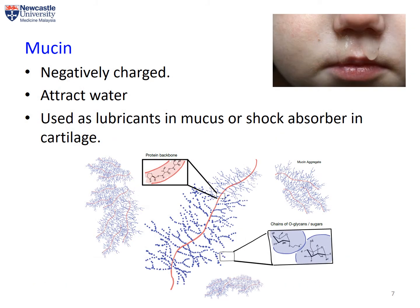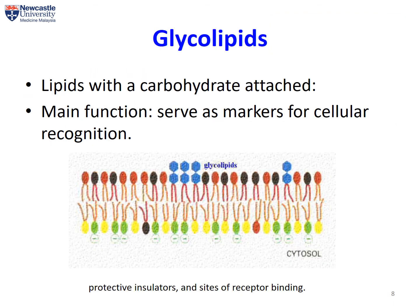A second example of a glycoprotein is mucin, which is found in mucus. Mucin has a protein backbone attached with many sugar molecules through O-glycosylation, and these sugars are known as O-glycans. Because this highly branched structure is highly polar due to the presence of multiple hydroxyl groups, it can attract water molecules. As a result, mucin can be used as a lubricant in mucus or serve as a shock absorber in cartilage.